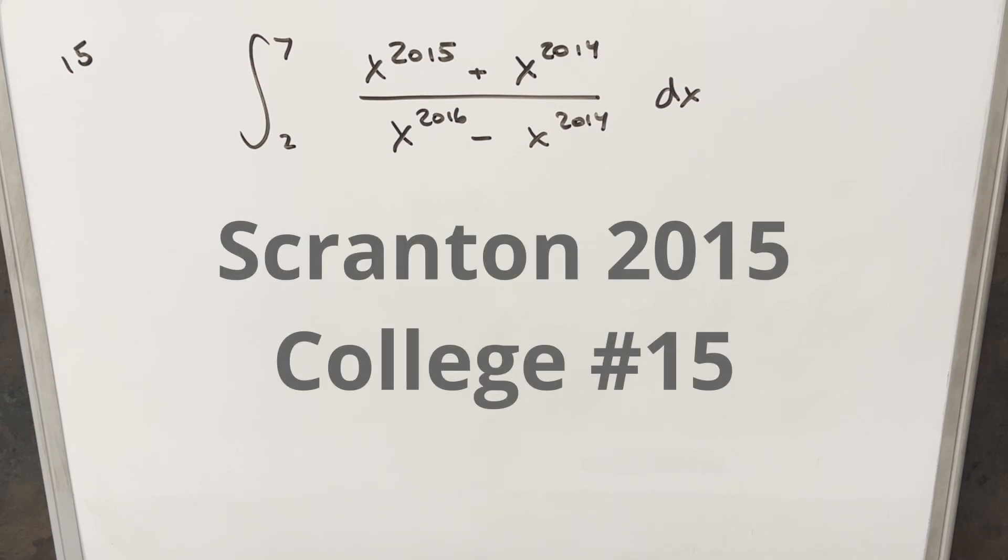We're turning to the integral from the Scranton Integration Bee 2015, problem 15. We have the integral from 2 to 7: x^2015 plus x^2014 over x^2016 minus x^2014 dx.